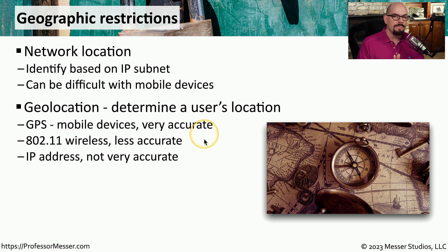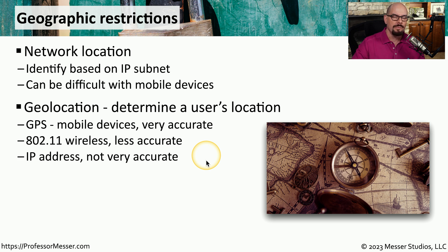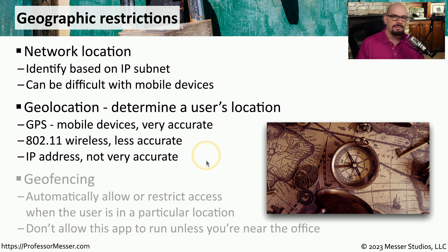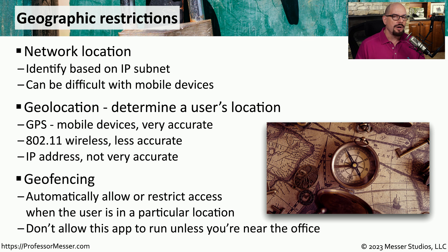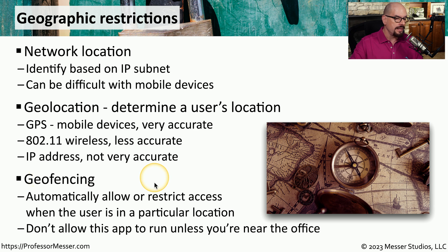With mobile devices, an IP address may not be the most accurate form for providing geolocation. Once you know where a person is and where your data is, you could start making decisions on what type of access someone might have to that data. When you're basing this on location, we refer to this as geofencing.